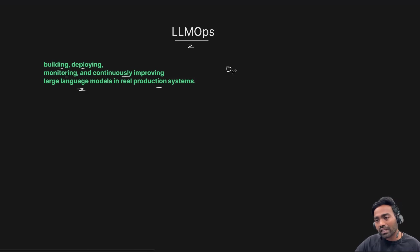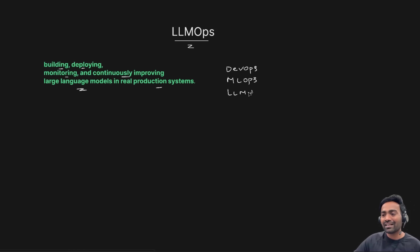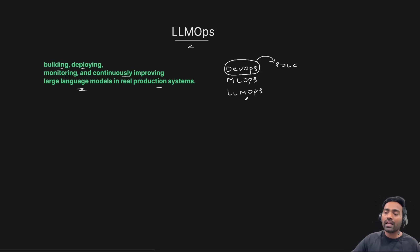Let me make this very simple for you. DevOps is for traditional software applications. MLOps deals with machine learning models. In the same way, LLMOps deals with large language models — the same principle and concept that DevOps applies for the software development lifecycle, LLMOps applies for large language models.